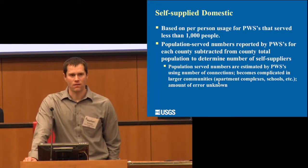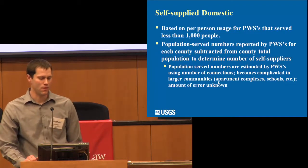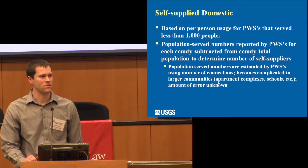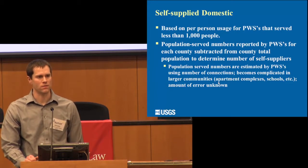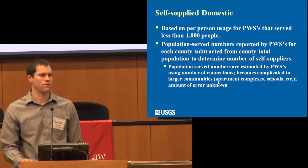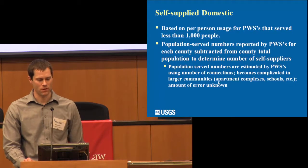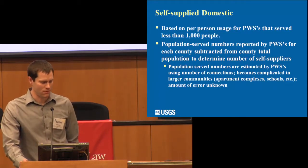For self-supplied domestic, we used the public water supply estimates, taking an average for systems with fewer than a thousand people. We used 2010 census data on county populations, and public water supply systems report how many people they believe are receiving water. Issues arise in cities like Omaha and Lincoln — large apartment complexes mean a lot more users than are being reported, since systems report on number of connections, so we definitely need to take that with a grain of salt.